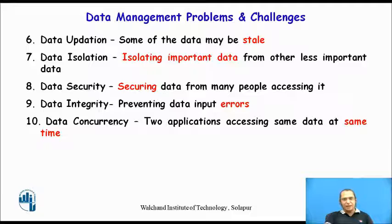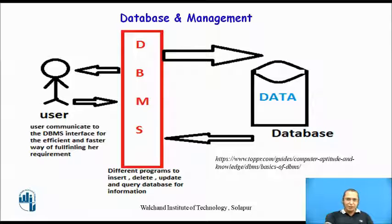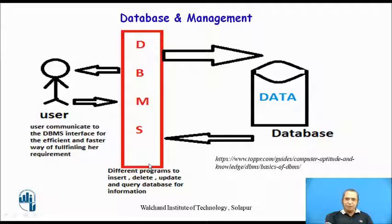Concurrency means that one or more applications are accessing the data at the same time, and handling this situation is called data concurrency. Although databases and database management systems are required, there are certain challenges in implementing them. To deal with these difficulties, organizations use the database management system — a computer software program that takes care of all these things. The data is located in a database, and users access it through the database management system.